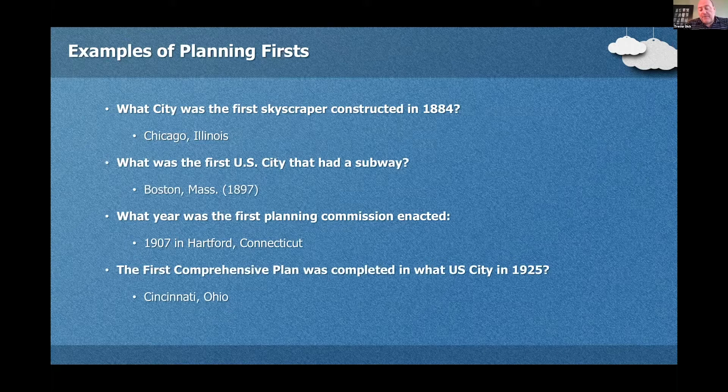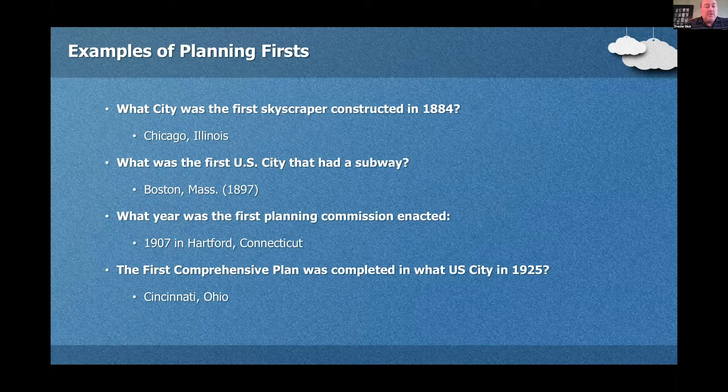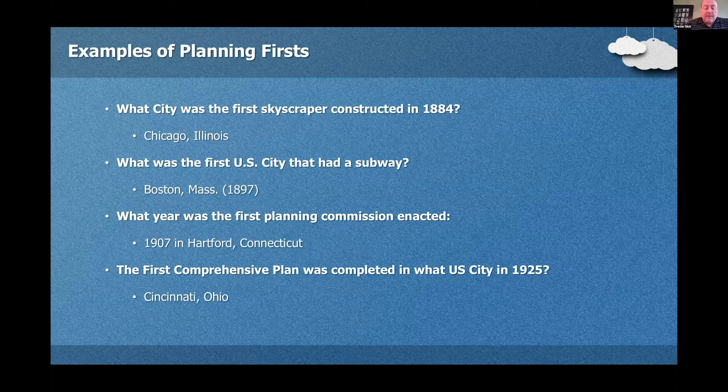Examples of planning firsts — you're going to find a lot of these on those timelines that the APA has put out. One I wanted to mention here is that the first comprehensive plan was completed in Cincinnati, Ohio in 1925. It was led by Alfred Bettman and George Ford and Ernest Goodrich, who, by the way, owned the first planning consulting firm in the country.